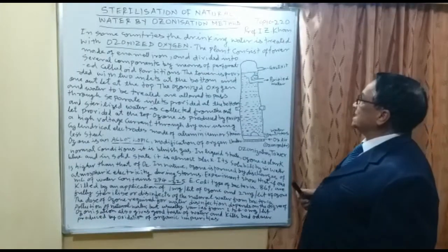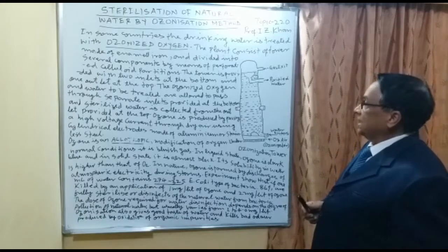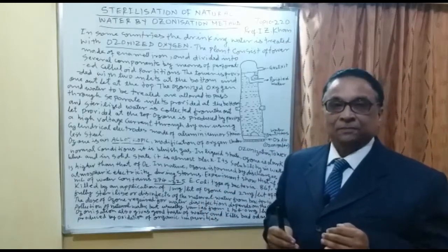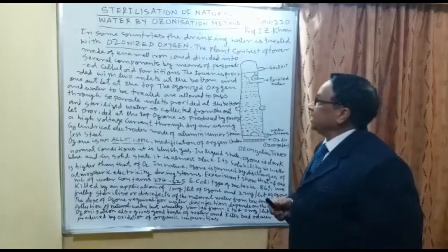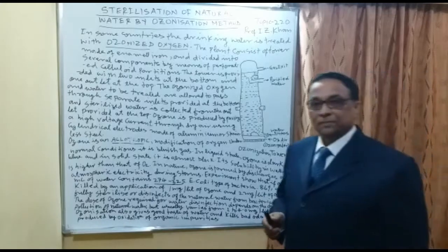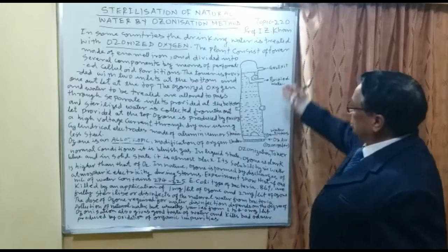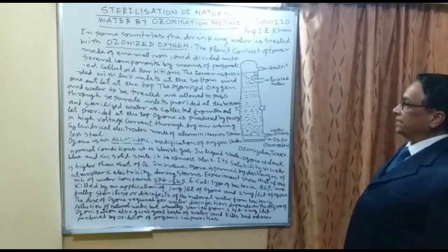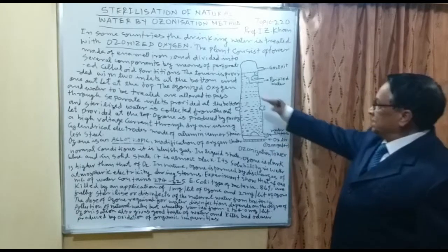In some countries, the drinking water is treated with ozonized oxygen. When it is treated with ozonized oxygen, sterilization takes place and disinfection of natural water occurs. The plant consists of a tower — the ozonization tower made of enamel iron and divided into several components.